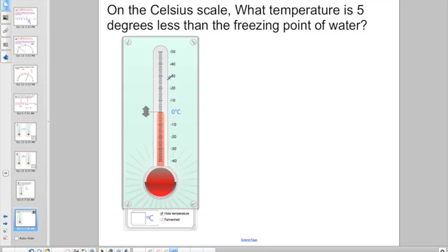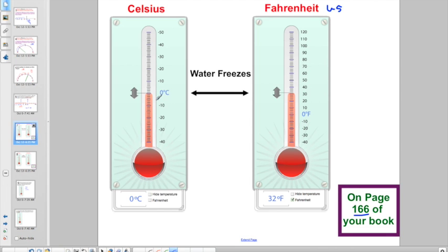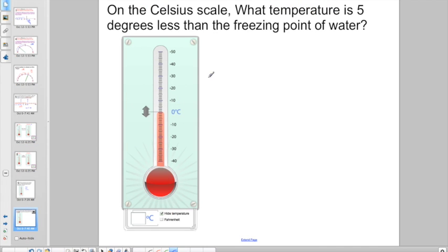Let's keep moving on. On the Celsius scale, what temperature is 5 degrees less than the freezing point of water? Did you forget it already? Where does water freeze on the Celsius scale? Do you remember? Water freezes at 0. So, what temperature is 5 degrees less? I want to go down 5 degrees and I'm starting at 0. This is where our knowledge of negative numbers comes in. Negative 5 degrees Celsius.